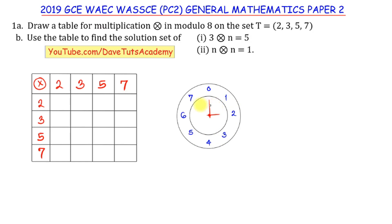To understand how to solve this question in modulo 8, imagine a clock with a maximum hour of 8. Since we are working with modulo 8, the maximum hour we consider is 8. Our normal traditional clock works with 12 as the modulo operation.